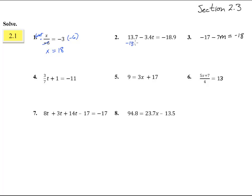Here we're going to subtract 13.7. And we get negative 3.4t equals, now these are both negatives, so they both go in the same direction. So we get a negative 32.6. Divide by a negative 3.4. It'll make it positive and stick it into your calculators. And we get t equals 9.59.